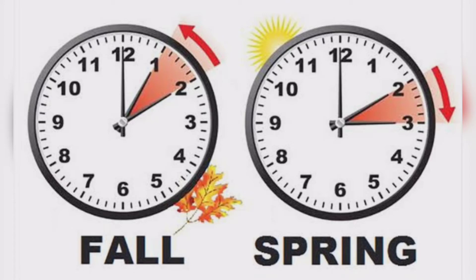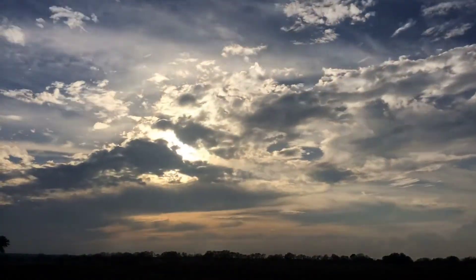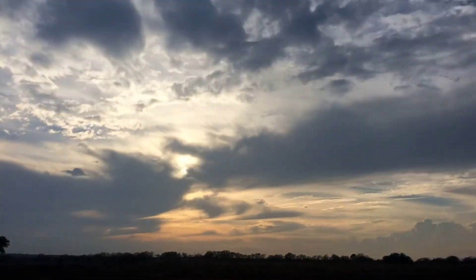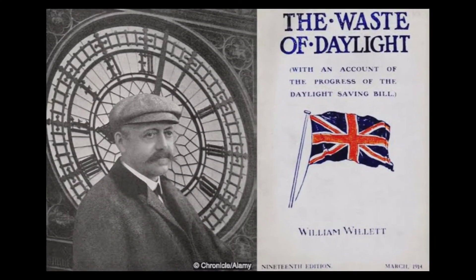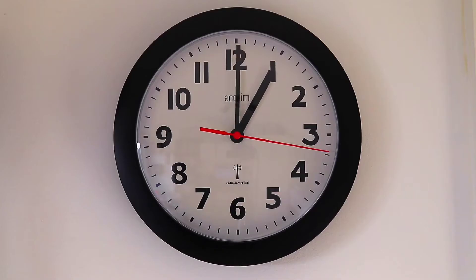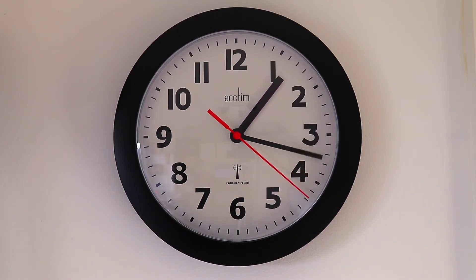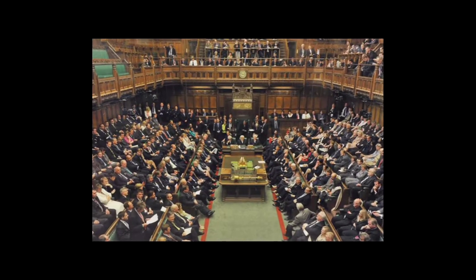This is the practice of resetting clocks ahead by an hour in spring and behind by an hour in autumn. During these months, countries that follow the system get an extra hour of daylight in the evening. In 1907, an Englishman William Willett campaigned for setting the clock ahead by 80 minutes in four moves of 20 minutes each during April, and the reverse in September.